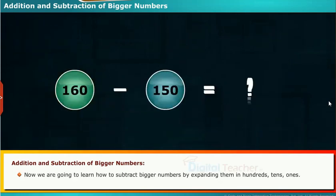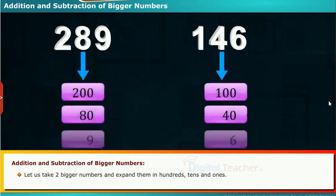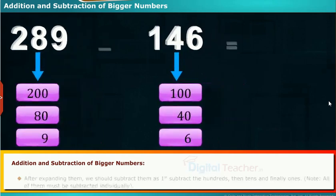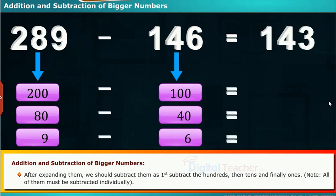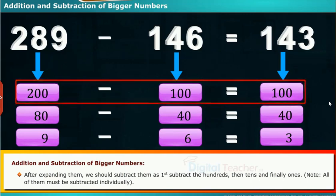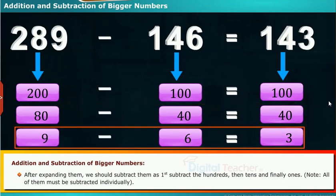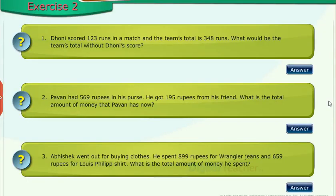Now we are going to learn how to subtract bigger numbers by expanding them in hundreds, tens, and ones. After expanding them, we should subtract them: first the hundreds, then tens, and finally ones. Note, all of them must be subtracted individually. 200 minus 100 equals 100; 80 minus 40 equals 40; 9 minus 6 equals 3. Let us see some exercise problems.